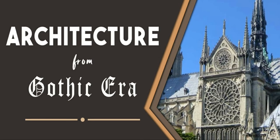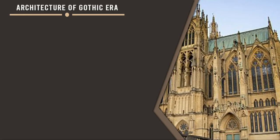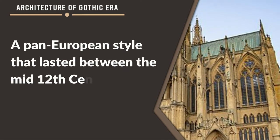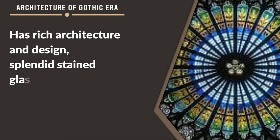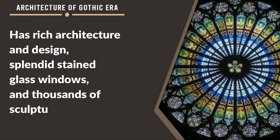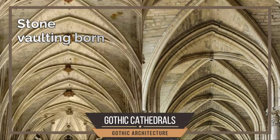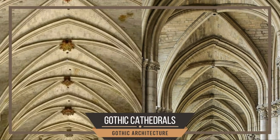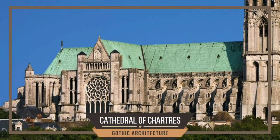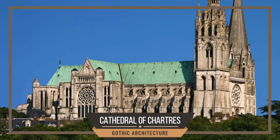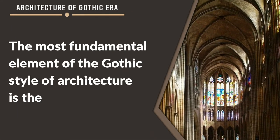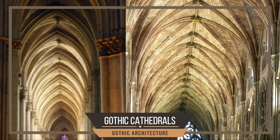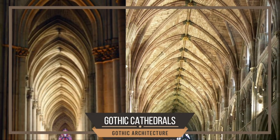Architecture of the Gothic era. Gothic architecture is a pan-European style that lasted between the mid-12th century and the 16th century. The Gothic style has rich architecture and design, splendid stained glass windows, and thousands of sculptured figures. It included stone vaulting born on a network of stone ribs supported by piers and structural pillars. The most fundamental element of the Gothic style of architecture is the pointed arch, which removed some of the thrust and enabled builders to construct much higher ceiling walls.